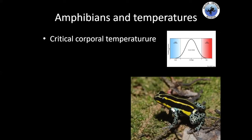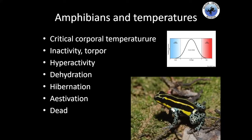Depending on the species you're working with, you should know these temperature ranges and try to replicate them in captivity. Depending on the temperature, species will have different strategies to protect themselves and survive. For example, you can have torpor, hyperactivity if it's too hot, dehydration if it's hot and dry, or hibernation and estivation if temperatures are extreme — and in extreme cases, they can die.